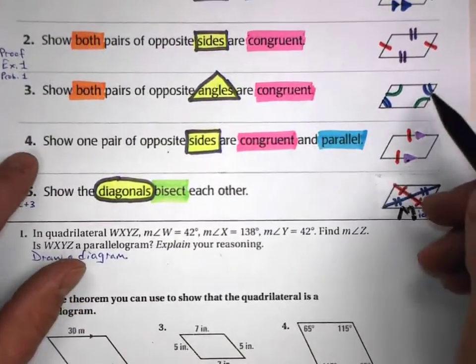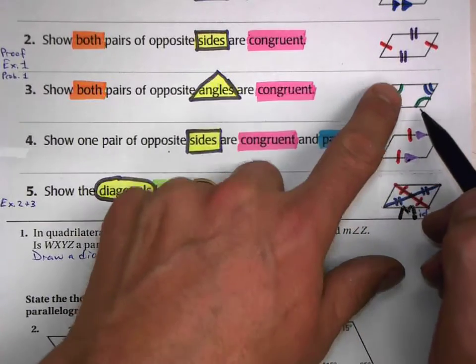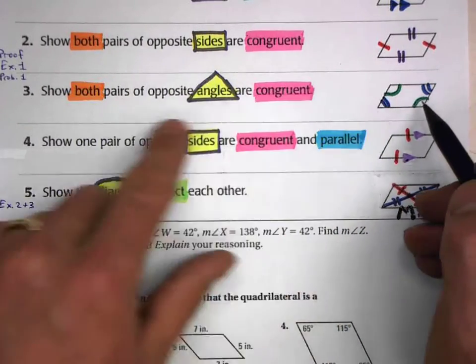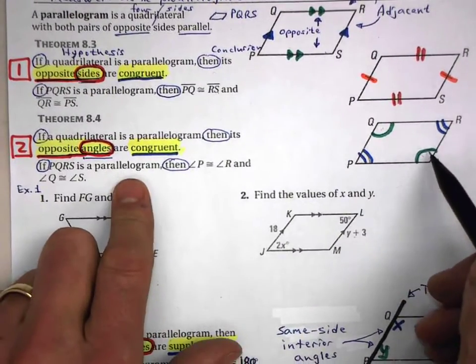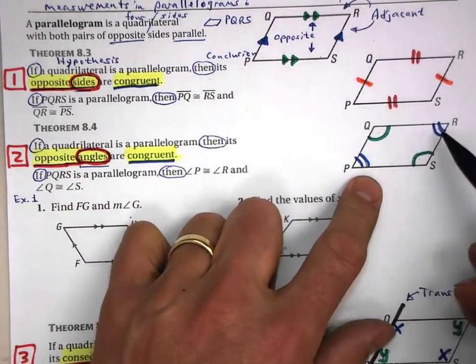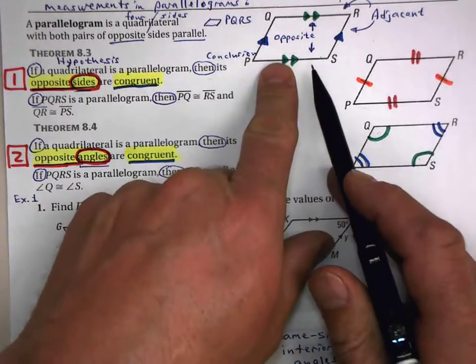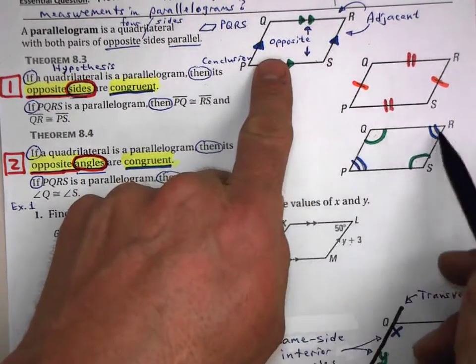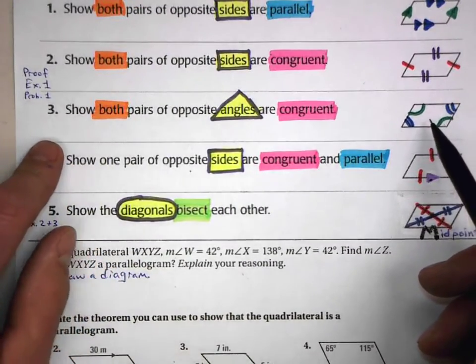It's also true that if both pairs of opposite angles are congruent, then we know that it is a parallelogram, because that's the converse of what this was. If it's a parallelogram, then both pairs of opposite angles are congruent. So the converse is also true: if both pairs of opposite angles are congruent, then it is a parallelogram.